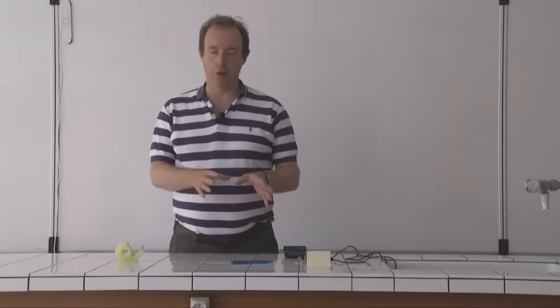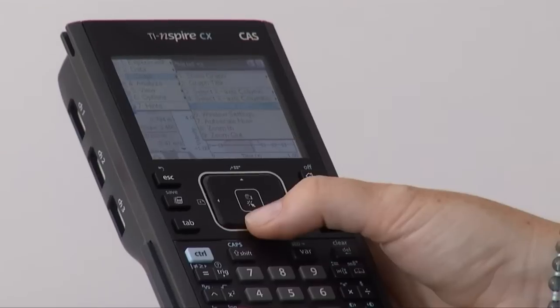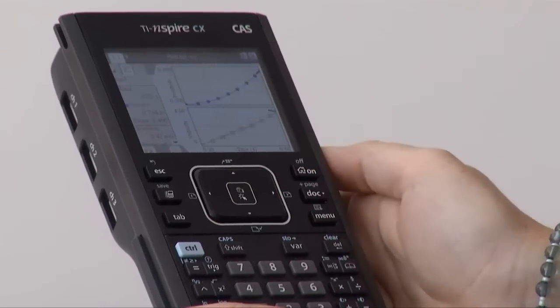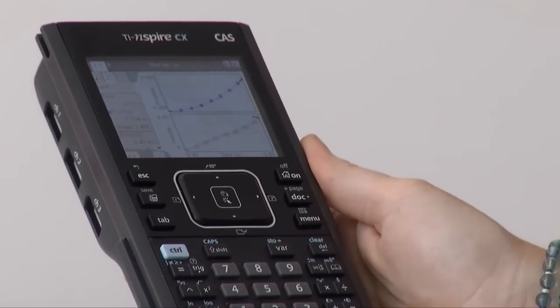Once you've done the practical, you can look at the graph that you get. You should find you get a straight line graph, and you can analyse the graph.